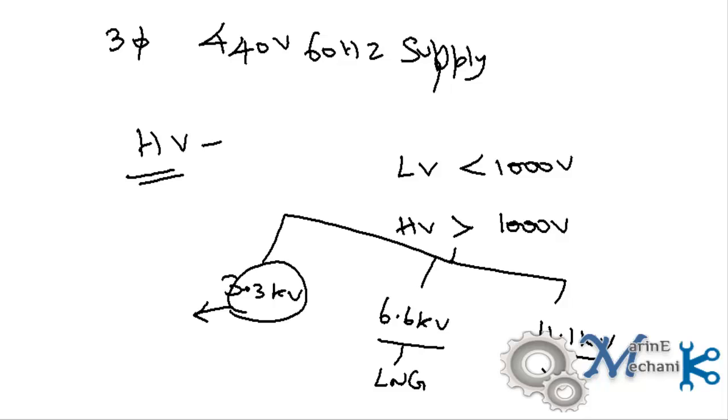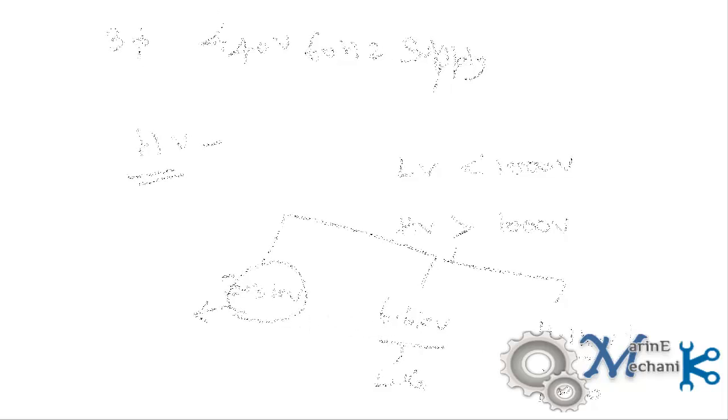11 kV can be found only on board passenger ships or some drill ships or even sometimes FPSOs. So let's now see why we use high voltage, either 3.3 kV, 6.6 kV, or 11 kV.